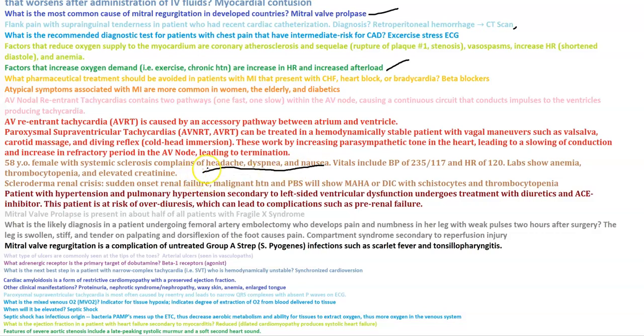Patients with hypertension and pulmonary hypertension secondary to left-sided ventricular dysfunction undergoing treatment with diuretics and ACE inhibitors are at risk of overdiuresis, which can lead to complications such as pre-renal failure. Mitral valve prolapse is present in about half of patients with fragile X syndrome.